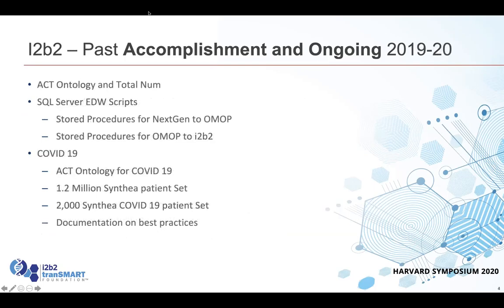As we matured, we started adding the ACT ontology and the total nums, and incorporated that into the main i2b2 repository. We then looked at ways to make ETL easier, writing stored procedures that would take an EHR system and bring it into OMOP format — specifically OMOP CDM version 6. Then we wrote stored procedures that went from OMOP to i2b2. So we have a NextGen to OMOP path, but we could have an AllScripts to OMOP or Epic to OMOP. All you have to do is convert into OMOP format and then run the OMOP-to-i2b2 scripts.